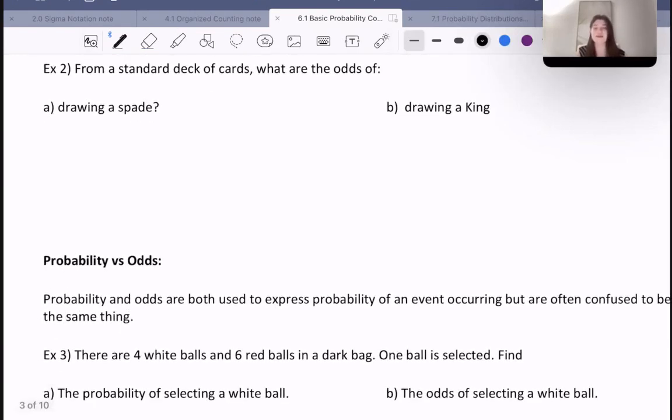Example two: From a standard deck of cards, what are the odds of drawing a spade? A deck of cards has four suits and 13 face values. The four different suits are spades, clubs, diamonds, and hearts, and each of these has 13 cards in it.